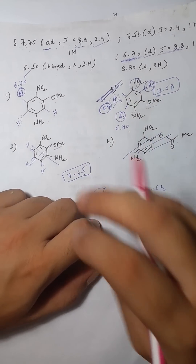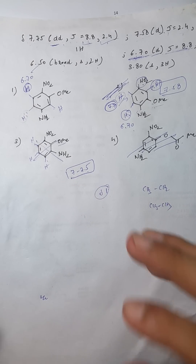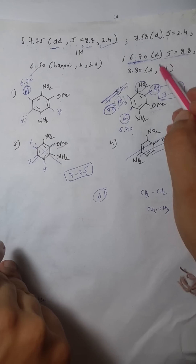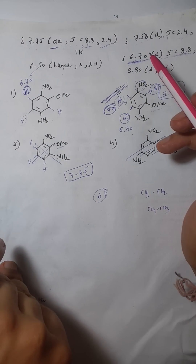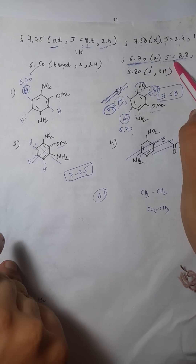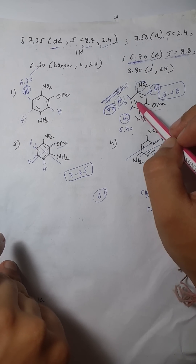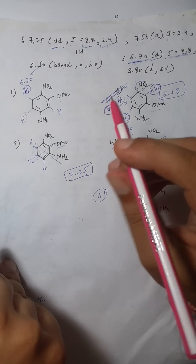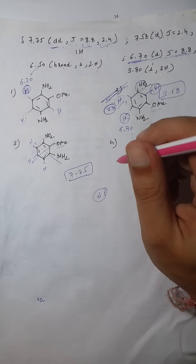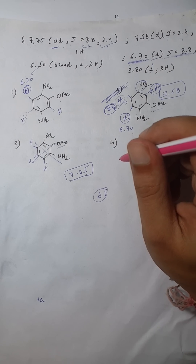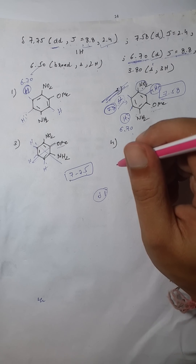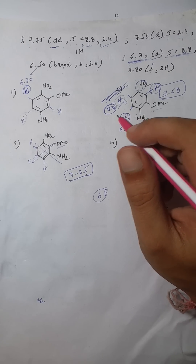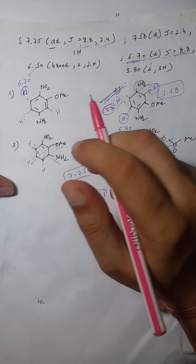So the approach is: first eliminate compounds using chemical shift values, then check the splitting pattern, and then use coupling constants — with that I'm pretty sure you'll solve the questions. If you like my style of explanation, comment below and I'll do more NMR videos with more tricks I have to solve these questions. Thank you.